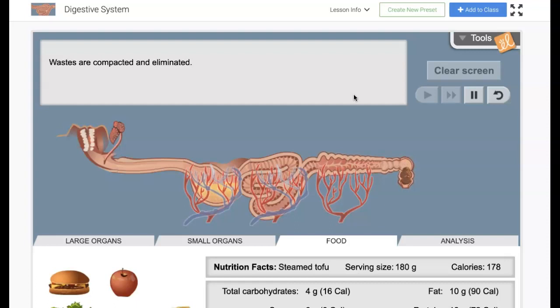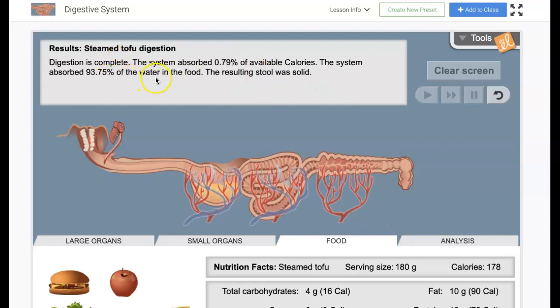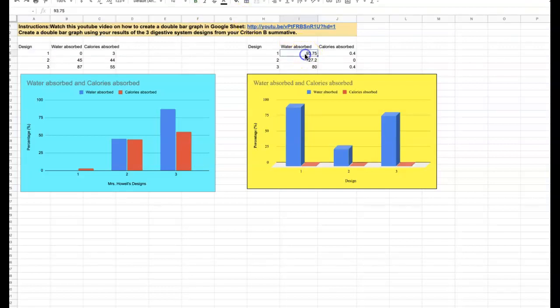As it gets eliminated, I will see the results up here. It shows me that the system absorbed 0.79% of available calories and the system absorbed 93.75% of the water in the food. Those two numbers, I'm going to put into my formative, which was due last Monday. This is it right here. I was able to do that. I'll do the same thing with my design 2 and design 3.